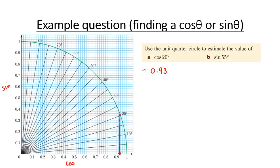Around about 0.93 just because we find the angle of 20 degrees and we go down to our cosine. If we're going to look at sine of 55, we find 55 and we go across to our sine and this is going to be approximately 0.82.